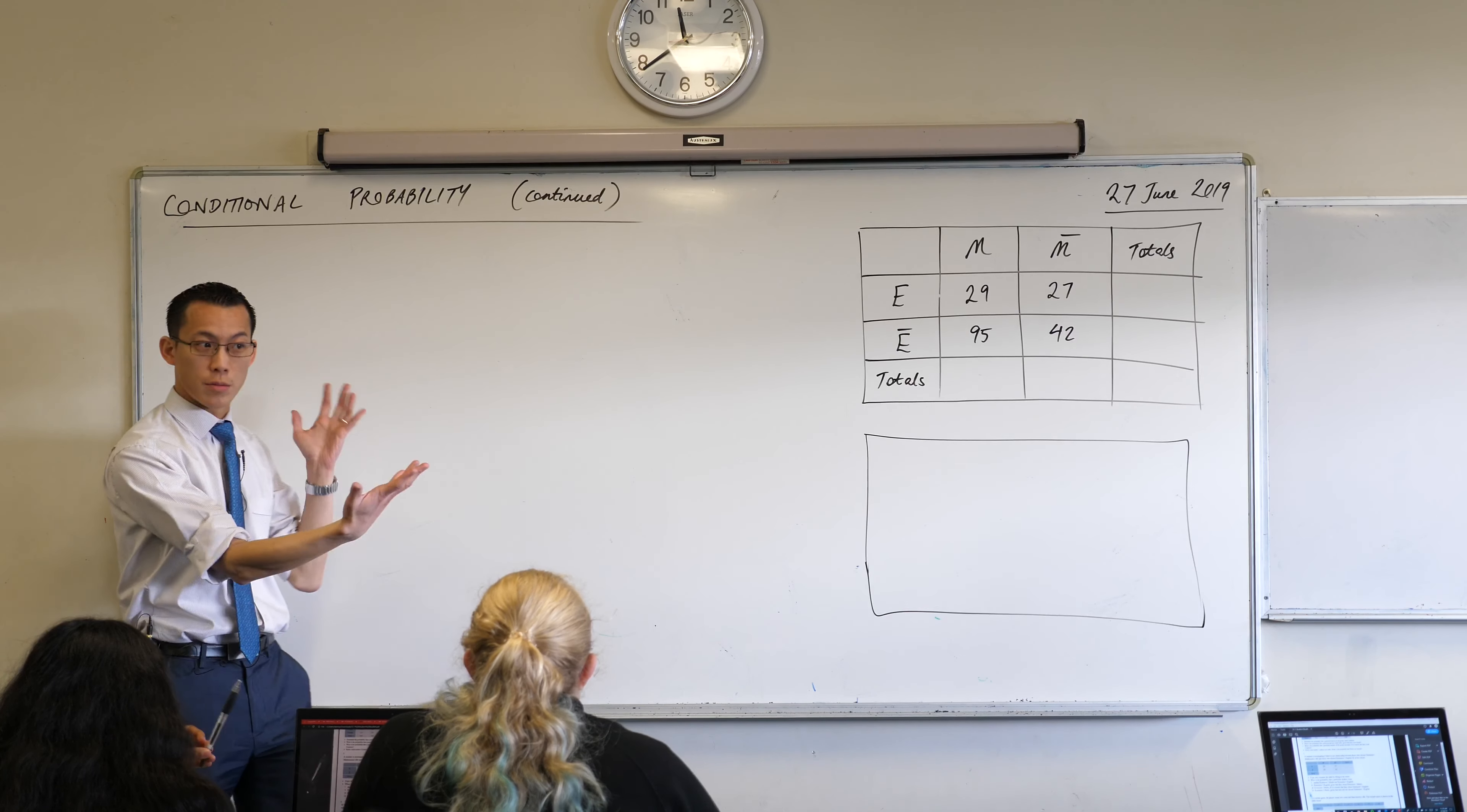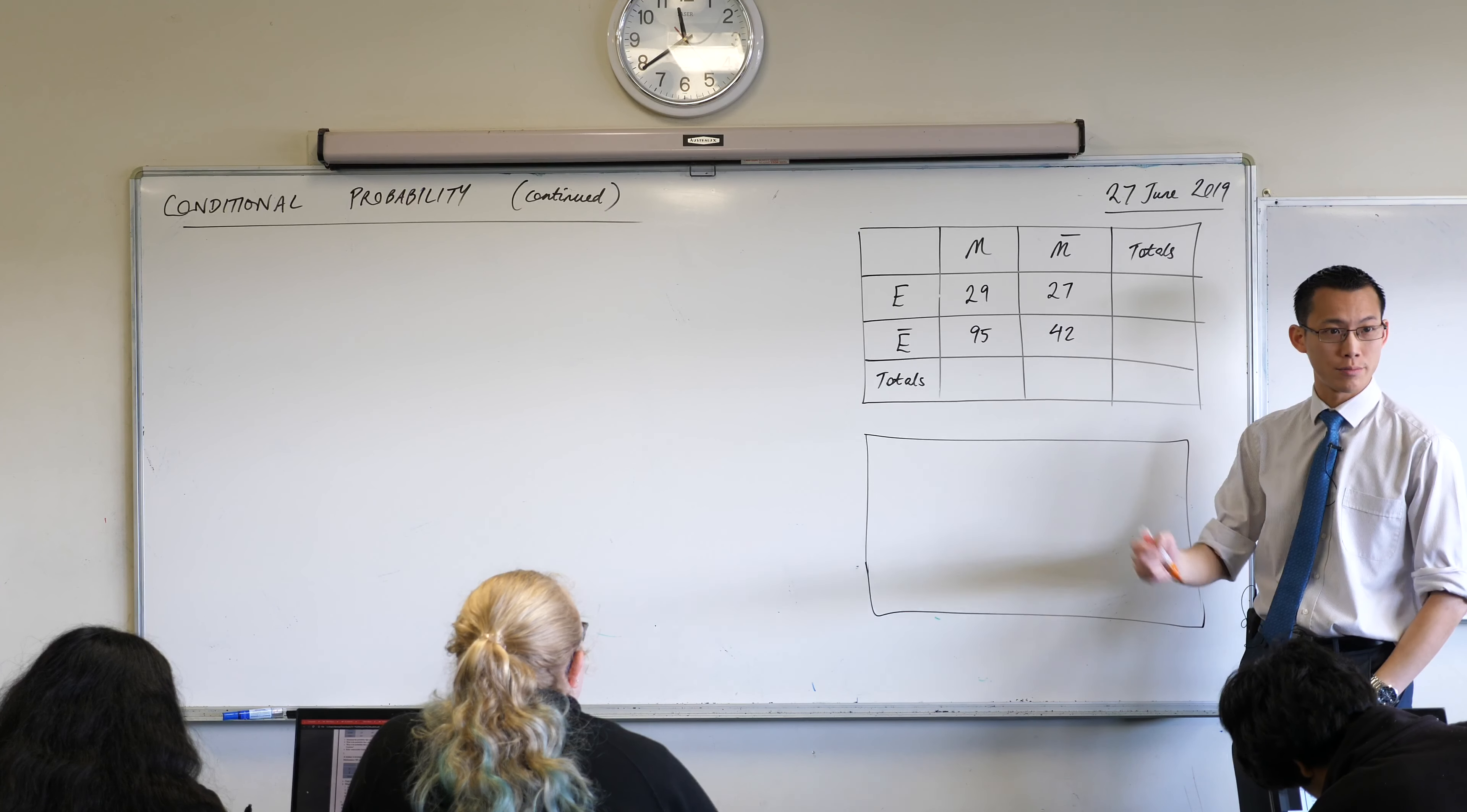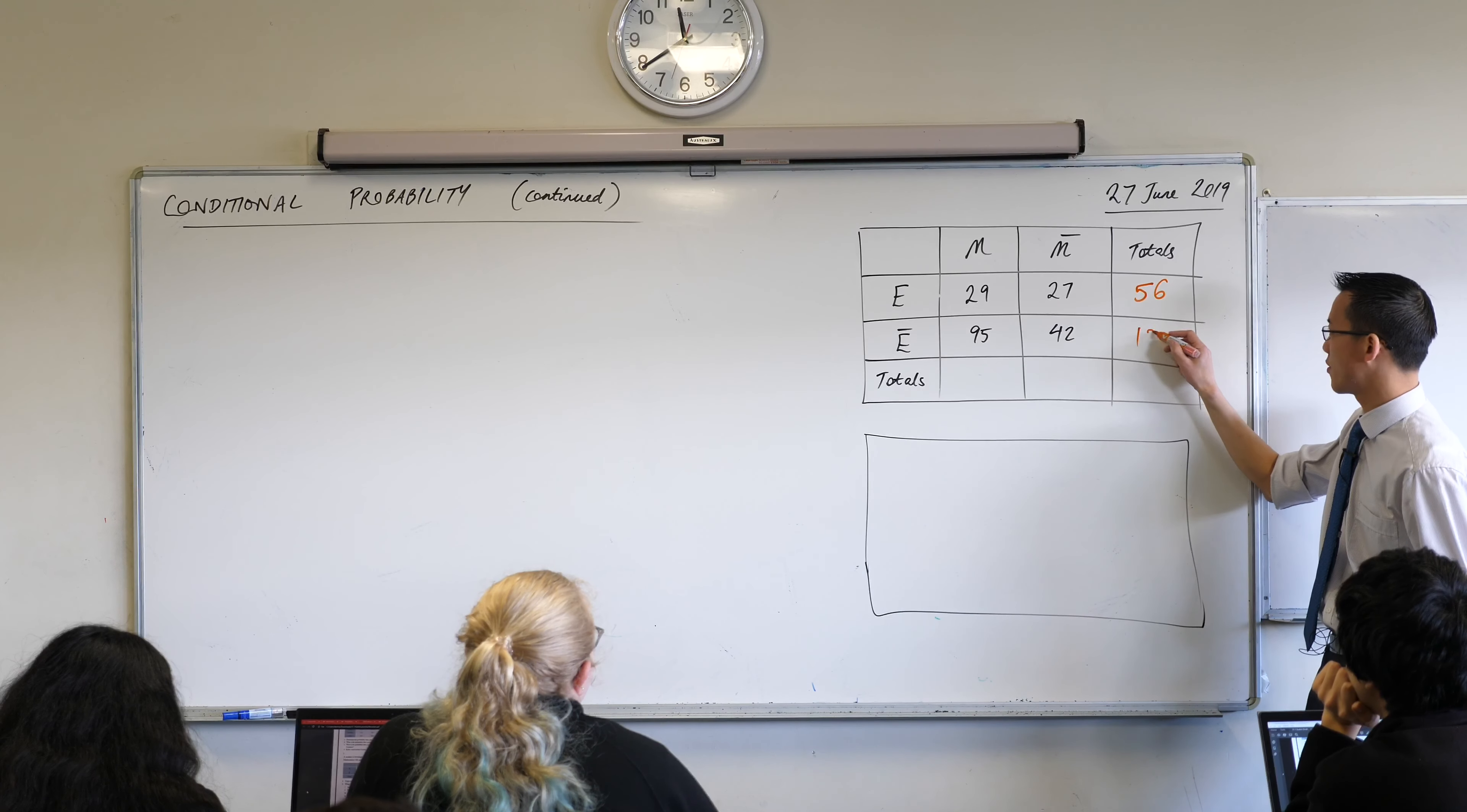So the first thing I want us to do is put some totals onto this. You can see if we want to go across to work out everyone who's doing extension 1 English, then we're just going to add up these two. Don't use your calculator, use your brain. What are you getting over here? Thank you very much. 56, these look bigger but they're still doable. 137, very good.